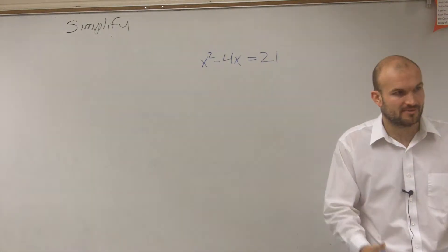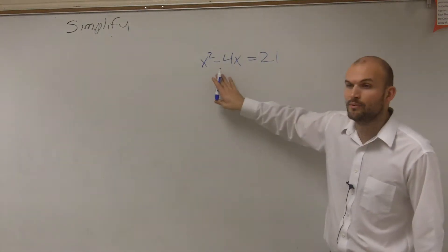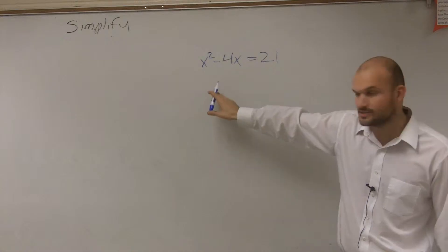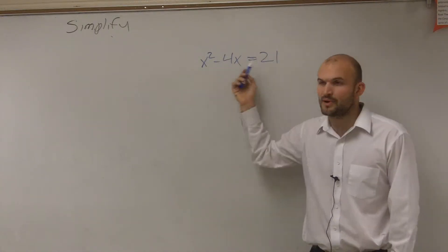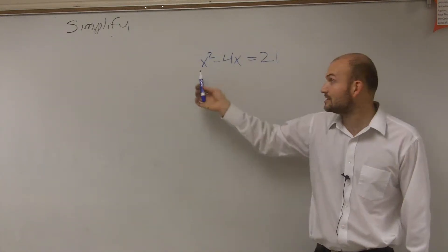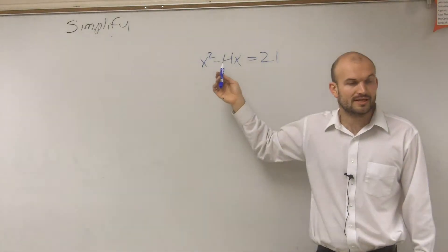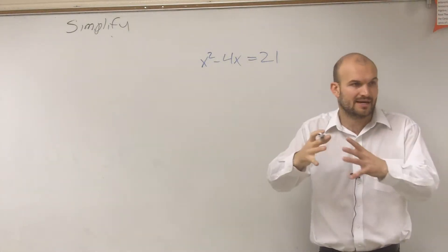So remember, we're still going to be doing factoring, but now we want to solve, meaning we want to find the value of x. So we've got to isolate the x. It becomes a problem here because we can't isolate the x because we have two of them, and one's squared and one's linear, so they're not like terms. You can't just combine them.